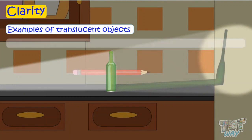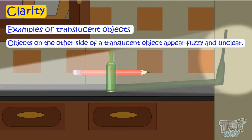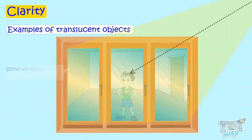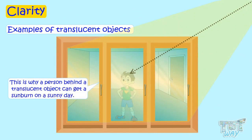Objects on the other side of a translucent object appear fuzzy and unclear, because translucent objects are semi-transparent. Some ultraviolet rays can go through them. This is why a person behind a translucent object can get a sunburn on a sunny day.